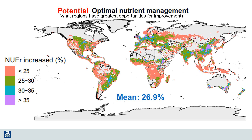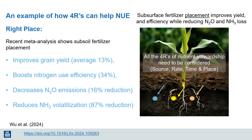The potential improvement in nitrogen use efficiency across the world is not the same everywhere. This map highlights areas in purple and blue, then green, that have the highest potential for improving nitrogen use efficiency. Another example comes from a recent paper where authors reported from a global survey that better placement of fertilizer will improve crop yield, improve nitrogen use efficiency, and decrease emissions of both nitrous oxide and ammonia.